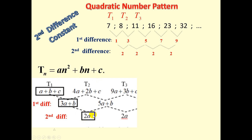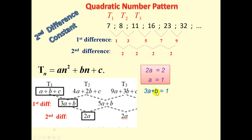Firstly, 2A equals the second difference, which is 2. Dividing both sides by 2 gives A = 1. We know that 3A + B represents the first difference, which is 8 minus 7 = 1. So 3A + B = 1. Substituting A = 1: 3 times 1 + B = 1, so B = 1 − 3 = −2.